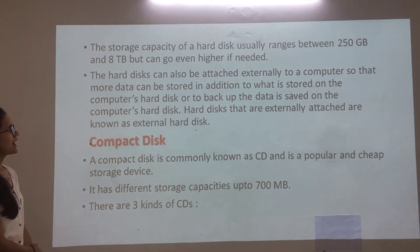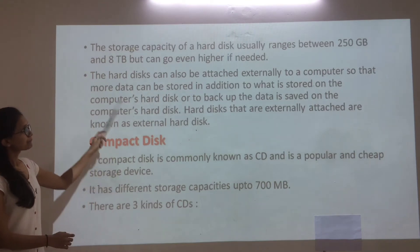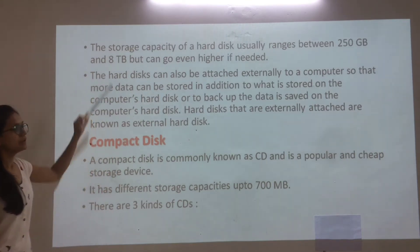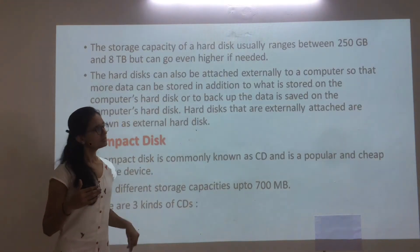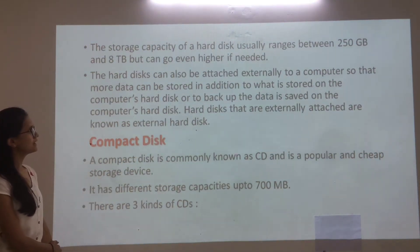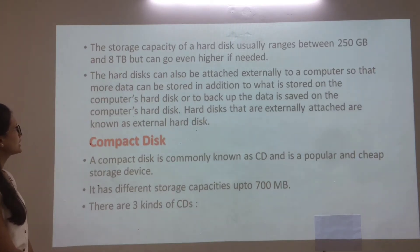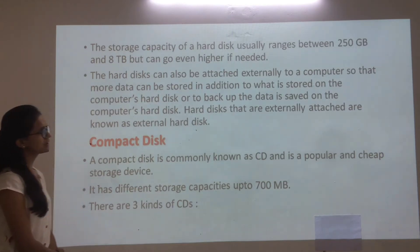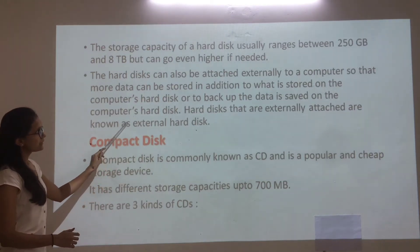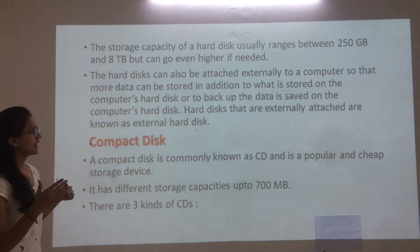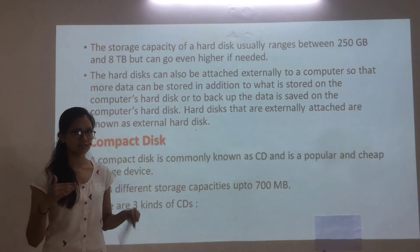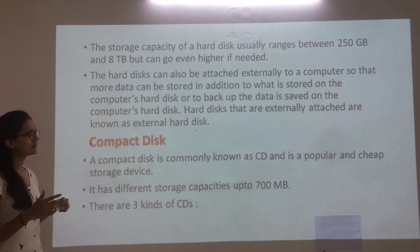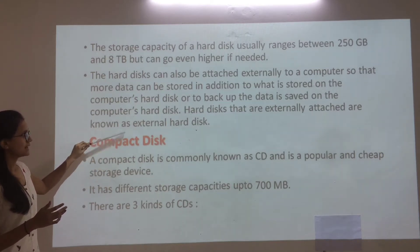The storage capacity of a hard disk usually ranges between 250 GB to 8 TB, but can go even higher if needed. The hard disk can also be attached externally to a computer so that more data can be stored in addition to what is stored on the internal hard disk, or to backup the data. Hard disks attached externally are known as external hard disks.